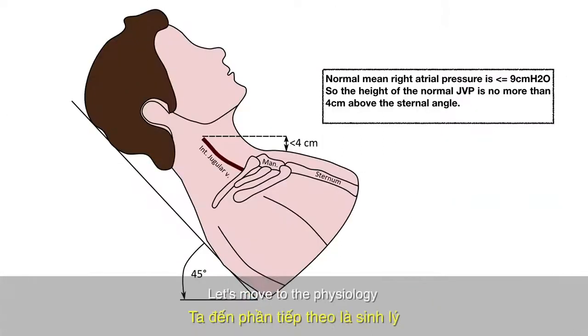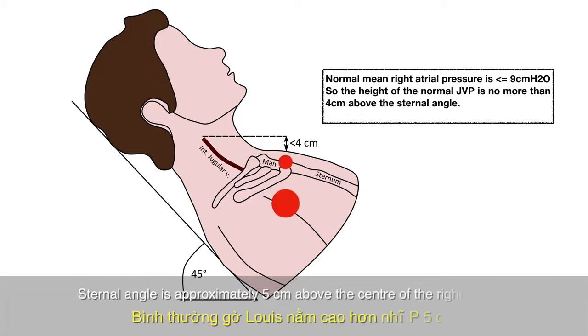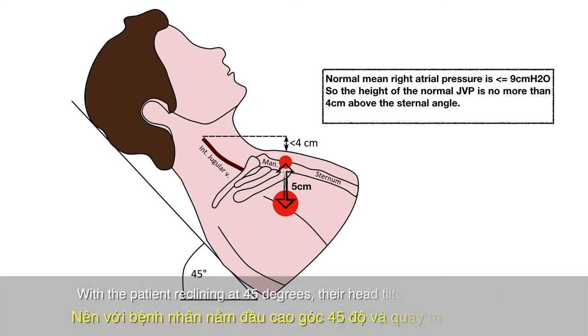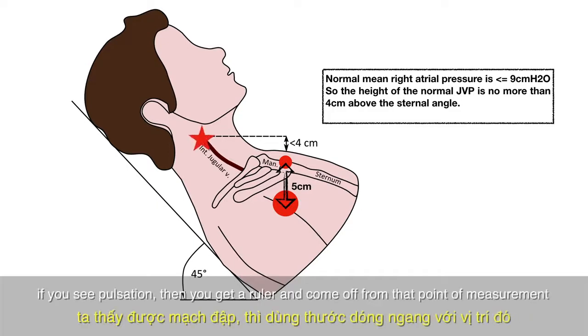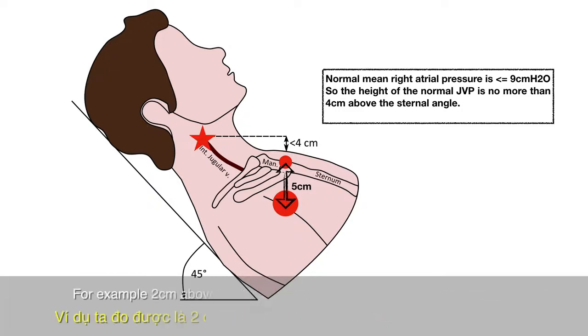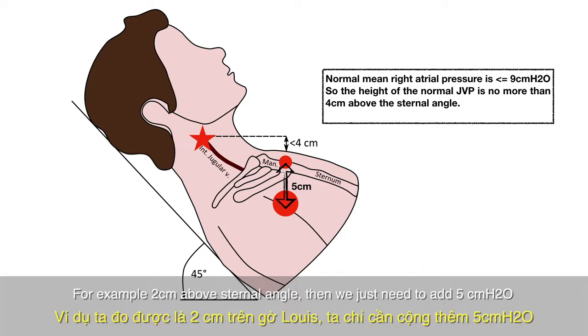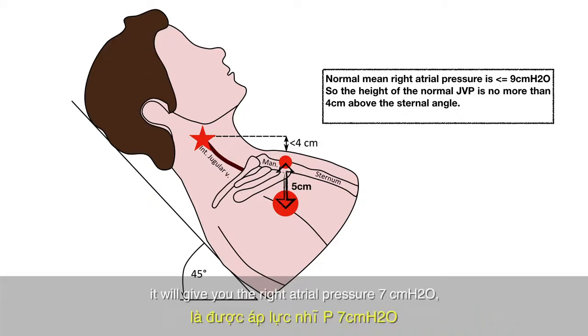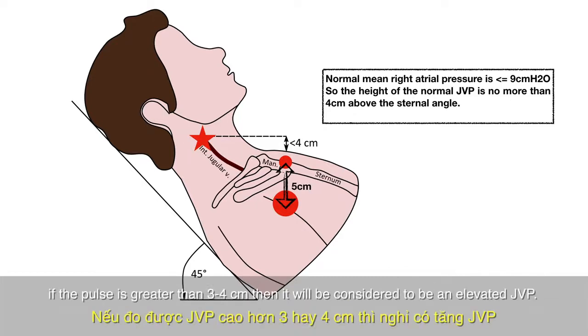Okay, so let's move to the physiology. Normally sternal angle is approximately 5 cm above the center of the right atrium, with the patient reclining at 45 degrees, the head tilted away to the left. And then you get a ruler and measure the height of pulse vertically to the sternal angle. For example, like 2 cm above sternal angle. Then we just need to add 5 cm of water and it will give you the right atrial pressure of 7 cm of water. So if the pulse is greater than 3 or 4 cm then it will be considered to be an elevated JVP.